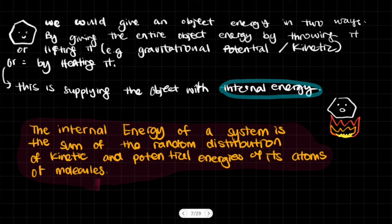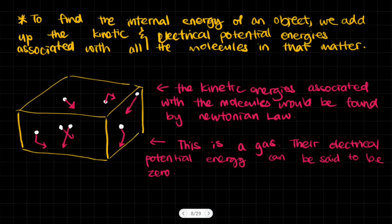The internal energy of a system is the sum of the random distribution of kinetic and potential energies of its atoms or molecules. So what does that actually mean?